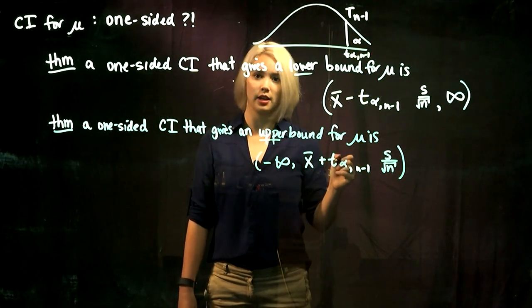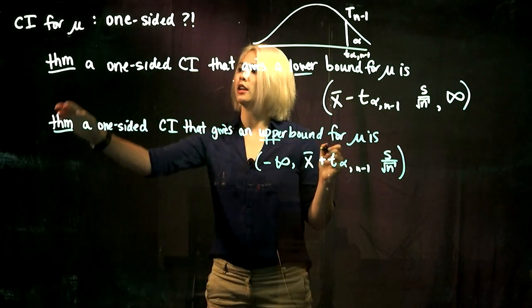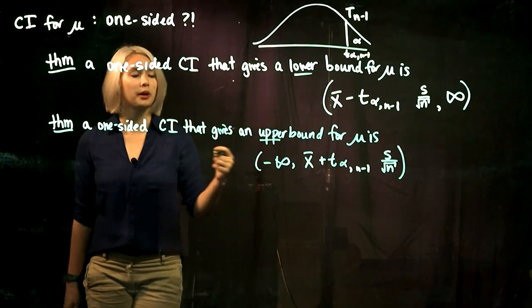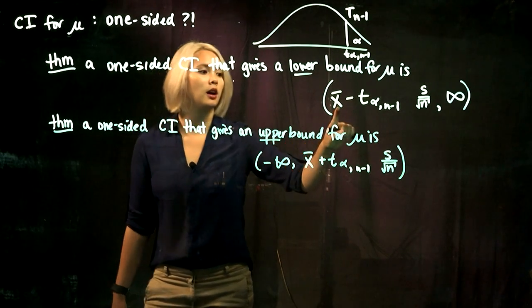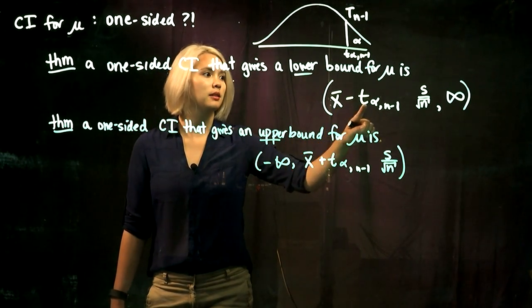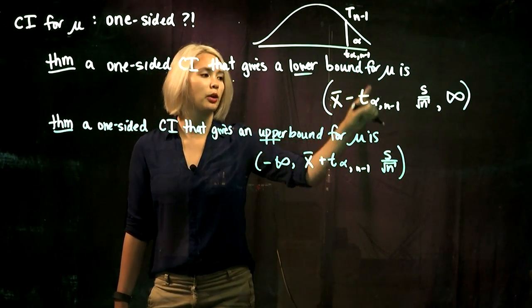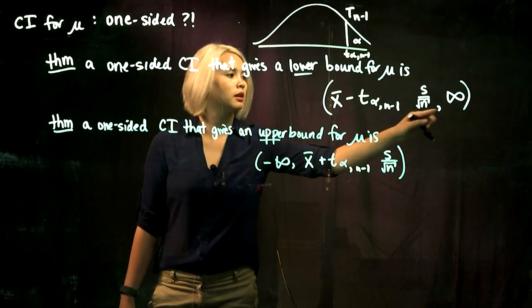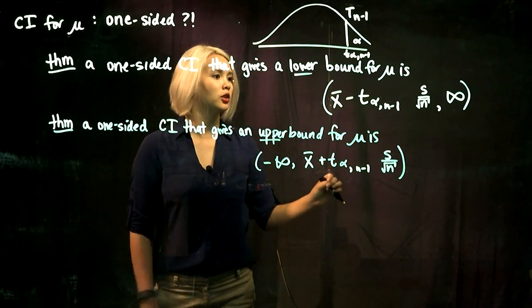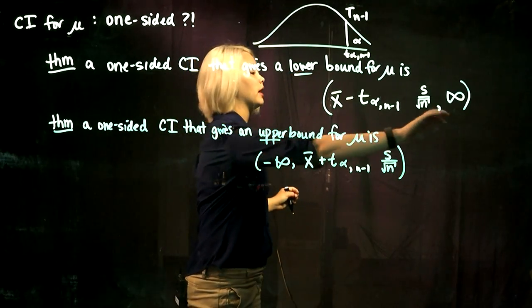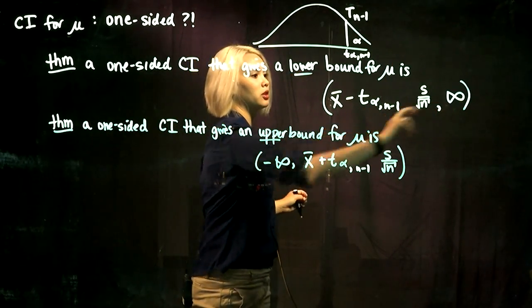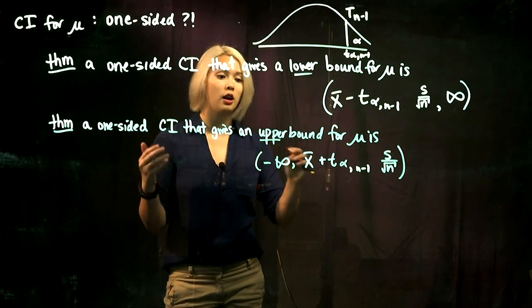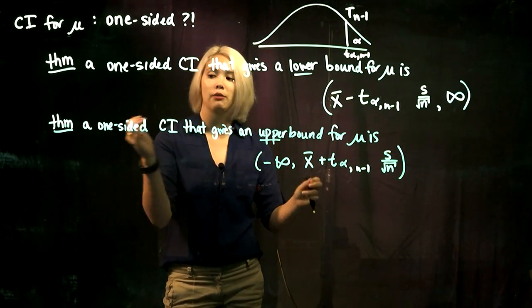A one-sided confidence interval that gives a lower bound for mu is going to be our sample mean minus that quantile times s divided by root n, comma infinity. So we have a lower bound, and we don't care about the upper bound so it just goes off to infinity.